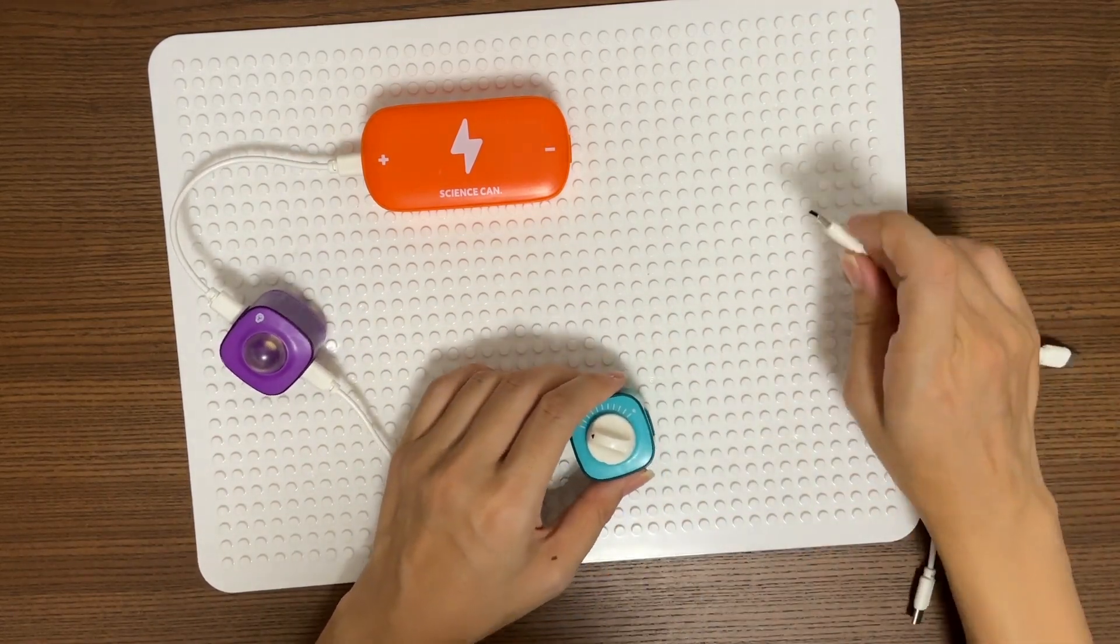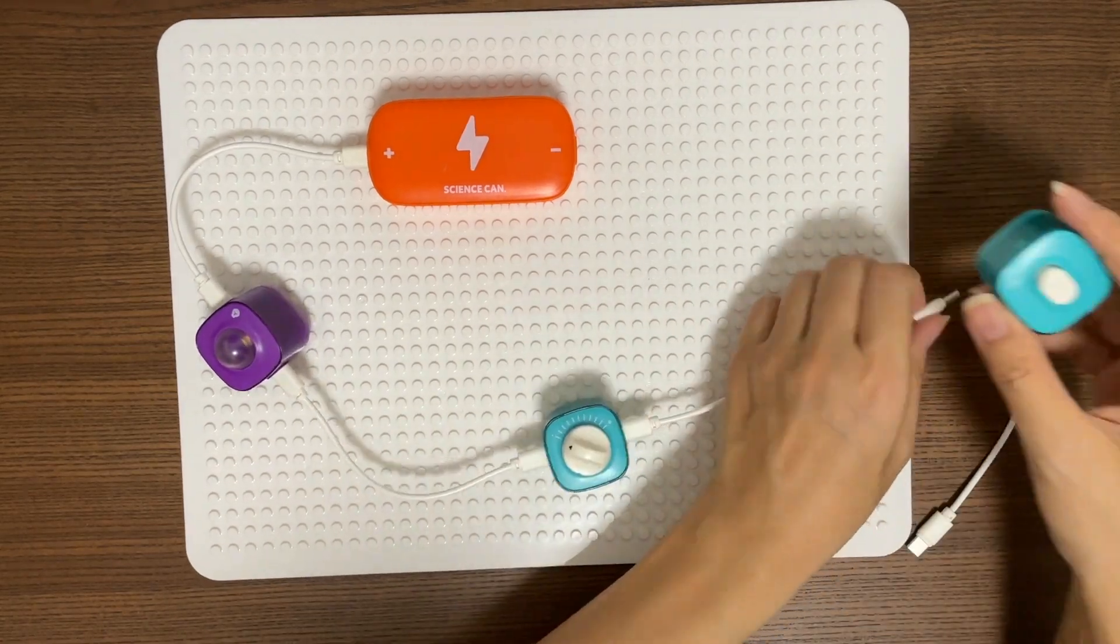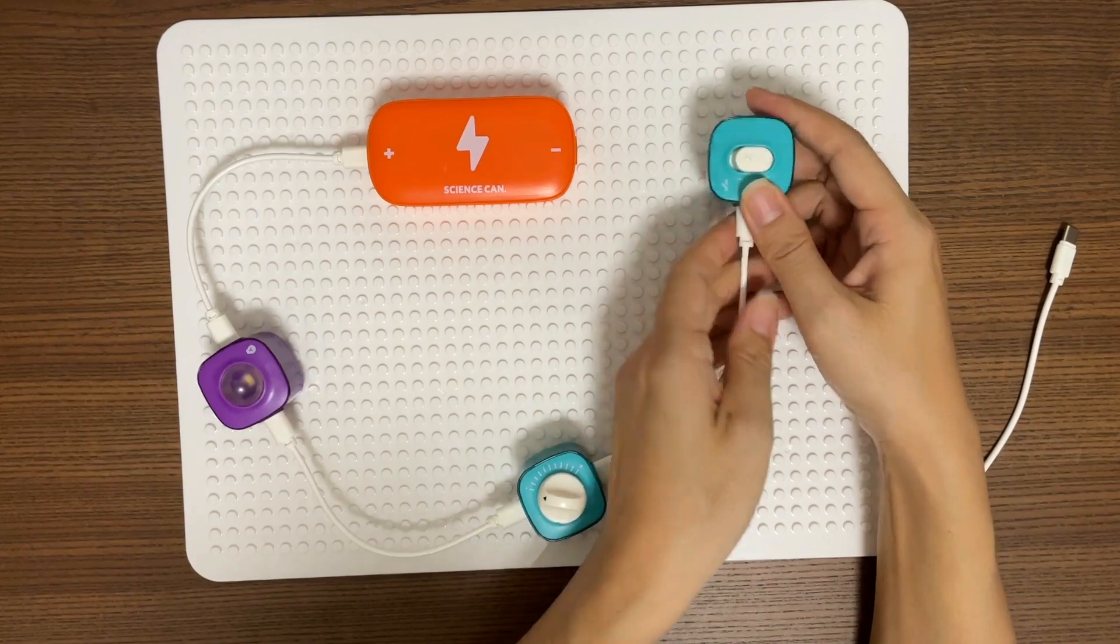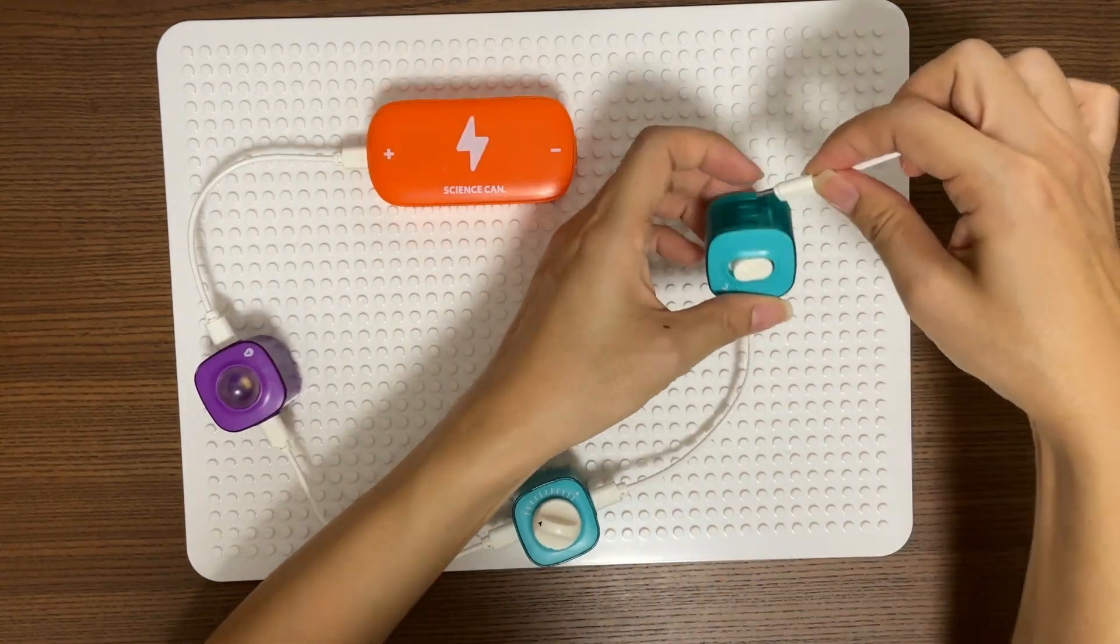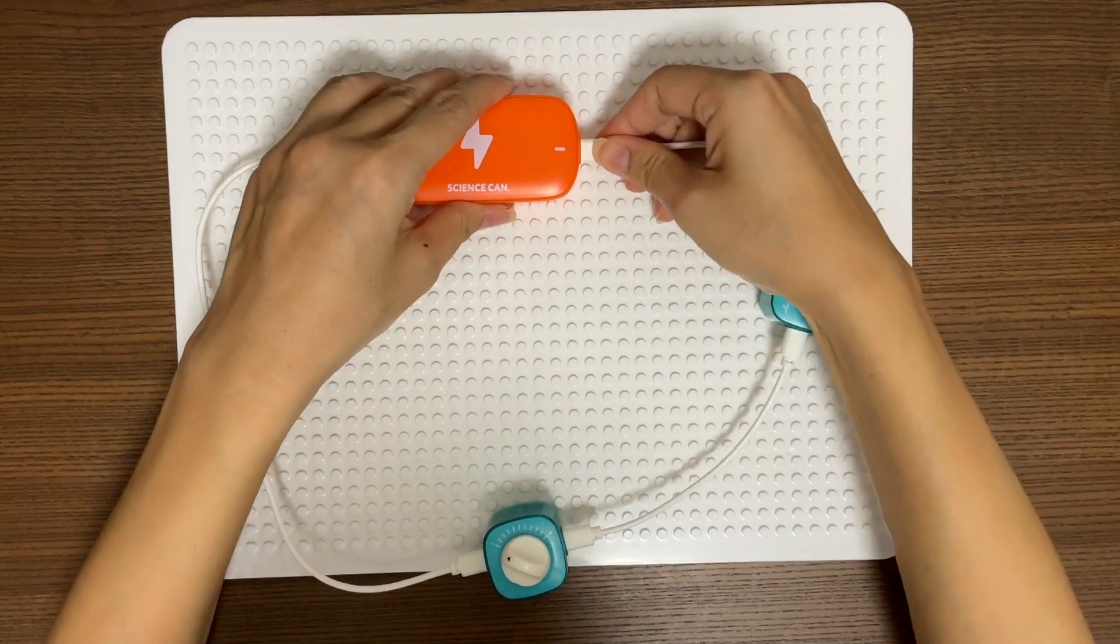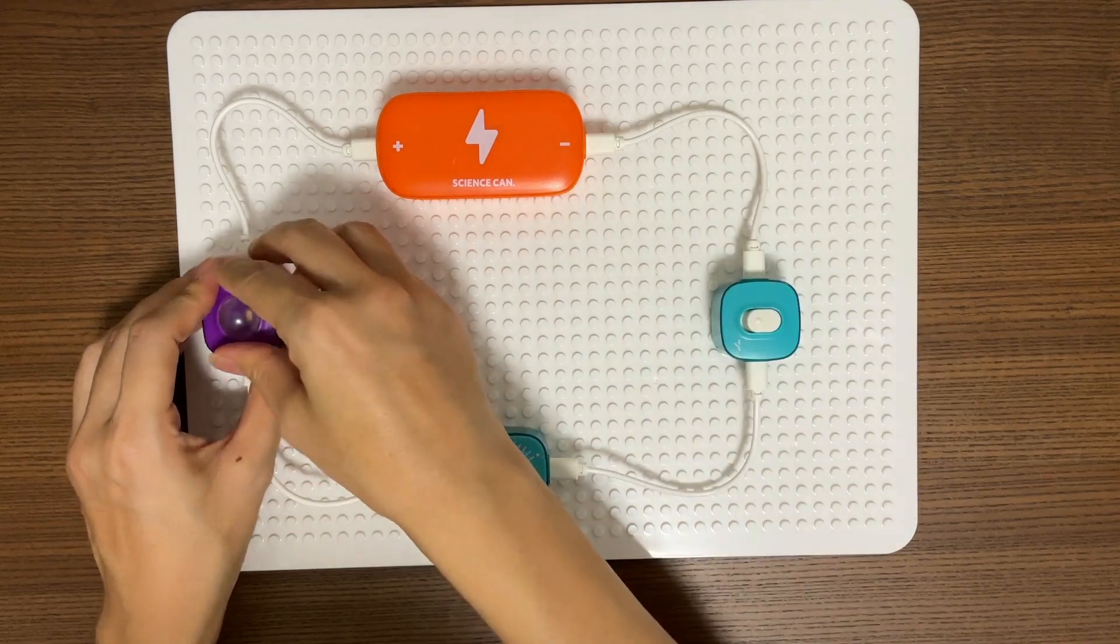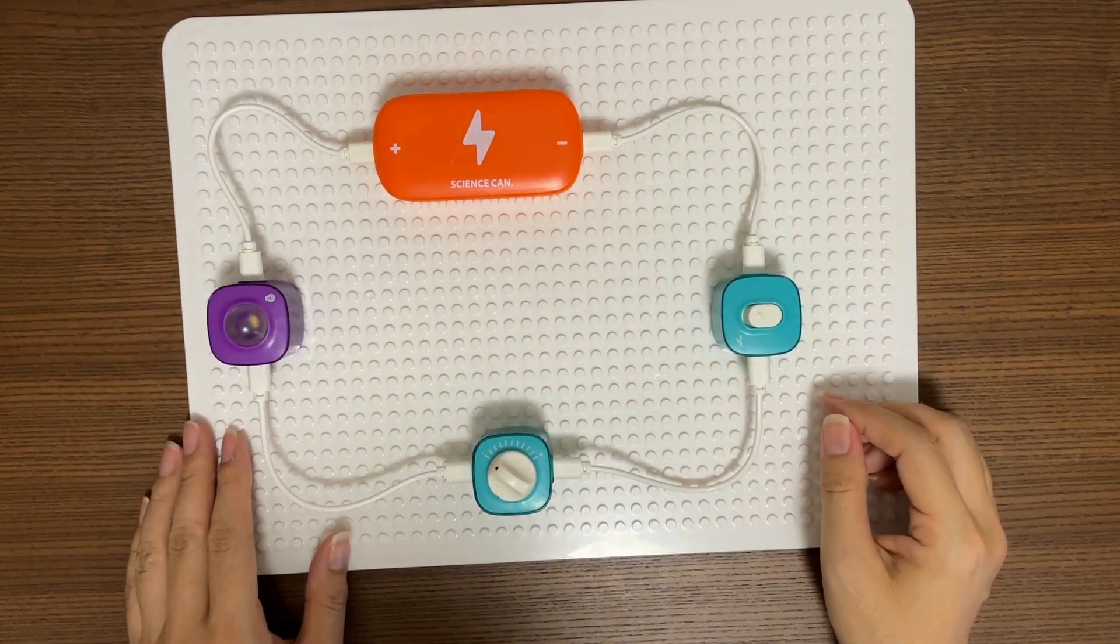And connect the knob to the switch. Connect the switch to the power module. Now we have a very simple closed circuit. And this is a series circuit.